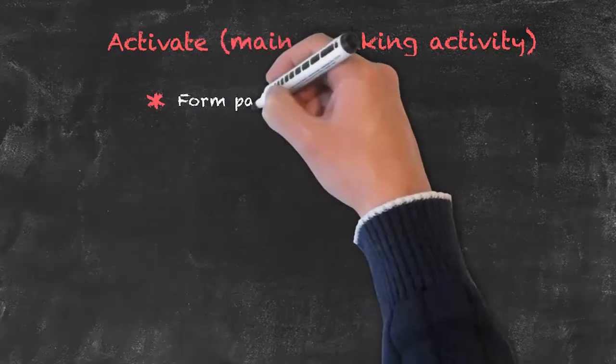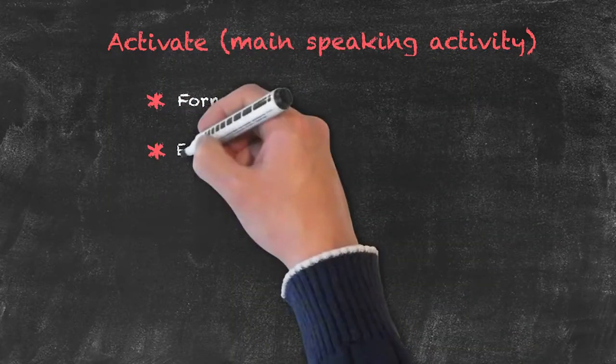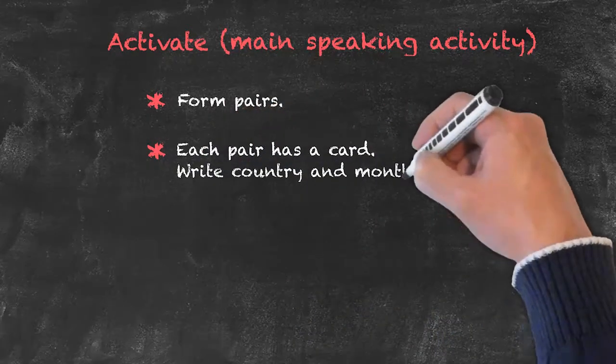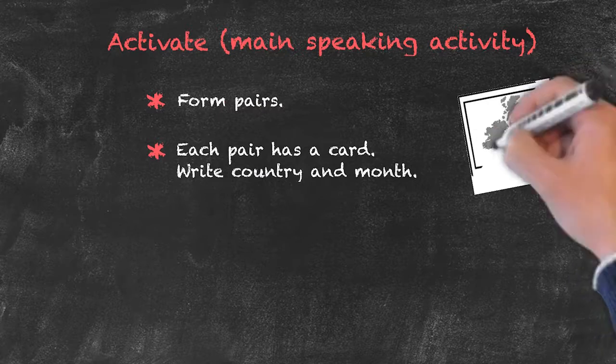So one way we could go around it is to, firstly, form pairs. Each pair is going to be given a card, and onto that card they're going to write a country and a month.